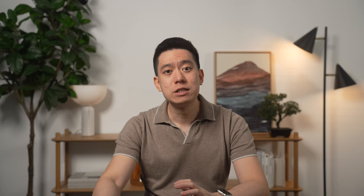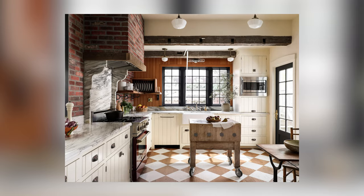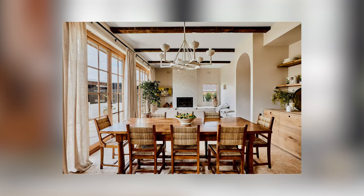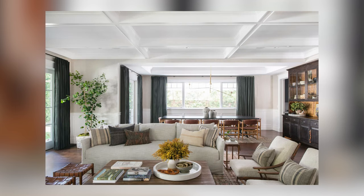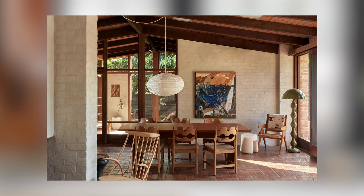Rough and uneven surfaces have raised texture, so they absorb more light and make colours seem darker. Rough textures will attract attention and activate eye movement, but can overshadow the use of form and colour. Generally, rooms with lots of rough textured surfaces feel softer and warmer. As rough surfaces have more visual weight, spaces that focus on these textures have a more casual or rustic feel.